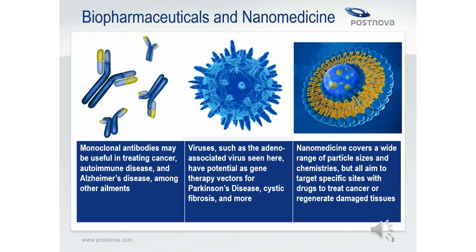Viruses and virus-like particles contain promise for delivering gene therapy to replace or deactivate a mutated gene or insert a new gene to fight disease. Among other conditions, viral vectors for gene therapy are being investigated for treatment of Parkinson's disease, cystic fibrosis, and congestive heart failure. Nanomedicine can take many forms, but generally consists of particles ranging from a few nanometers to several hundred nanometers, which can deliver drugs or genes and provide internal imaging, aiming to improve treatment in regenerative medicine or to deliver drugs to selectively attack cancer cells.